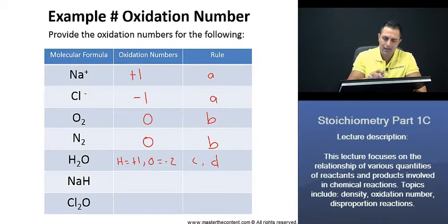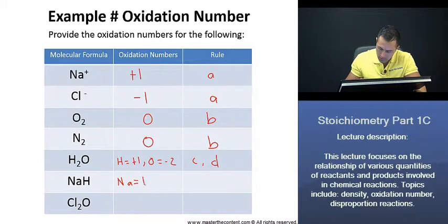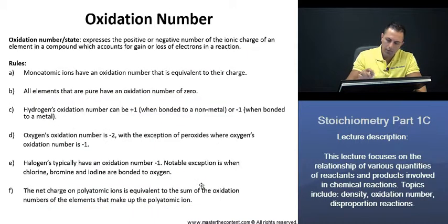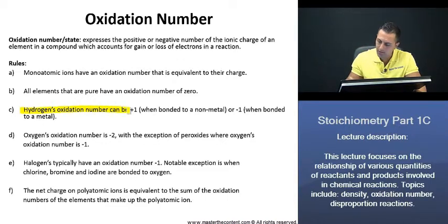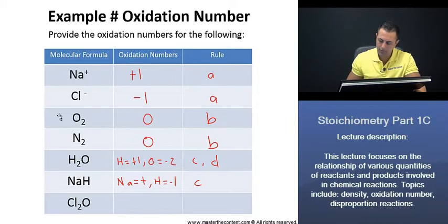Great. Now, getting back to our slide, next we have here sodium hydride, and we know the oxidation number for sodium is plus 1. However, this time the oxidation number for hydrogen is negative 1, and that again is because of rule C. And if we go back, we see that it says, right here, that hydrogen's oxidation number can be negative 1 when bonded to a metal. Thus, that is why our oxidation number here is negative 1.